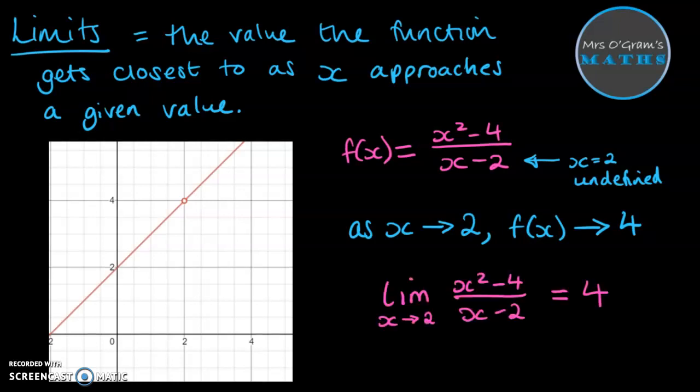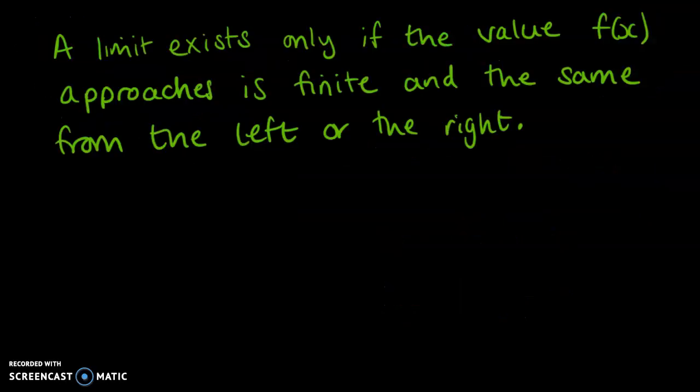Another way we can write that is like this, where the limit as x tends towards 2 of this function, x squared minus 4 over x minus 2, is equal to 4. Now, a limit exists only if the value that f of x approaches is finite, meaning a definite number, and the same from the left or the right.